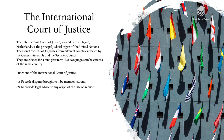The International Court of Justice is located in The Hague, Netherlands. It is the principal judicial organ of the United Nations. The court consists of 15 judges from different countries, elected by the General Assembly and the Security Council for a nine-year term, with no two judges being citizens of the same country. Its functions are to settle disputes brought to it by member nations and to provide legal advice to any organ of the UN on request.